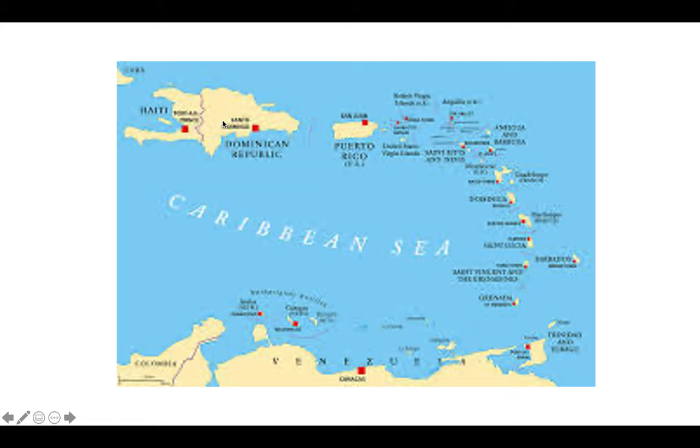Here you can see a picture of the Caribbean. This is the island of Hispaniola — one island containing two countries: Haiti and the Dominican Republic. If the map were bigger, you would also see Cuba and Jamaica. These larger islands are the Greater Antilles. These smaller islands arcing up from South America, including Aruba, are the Lesser Antilles.